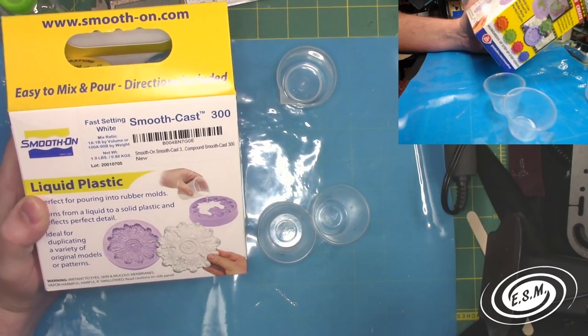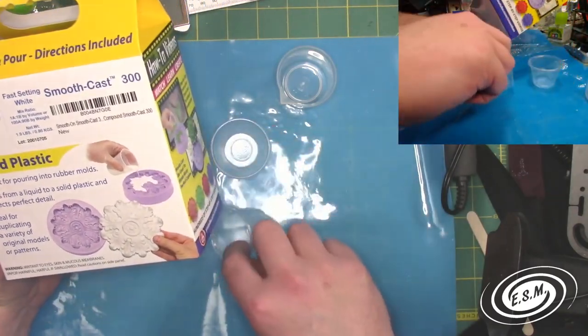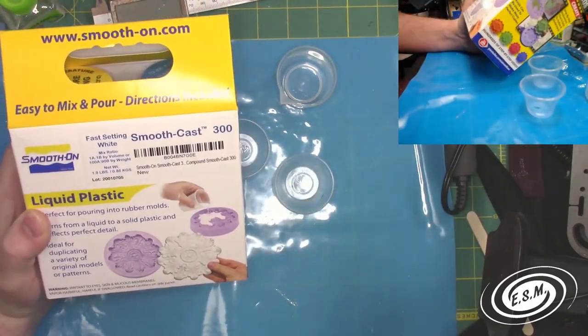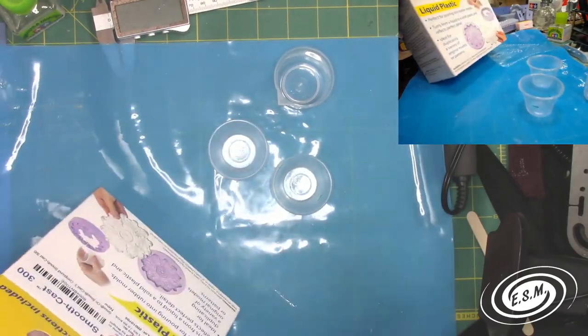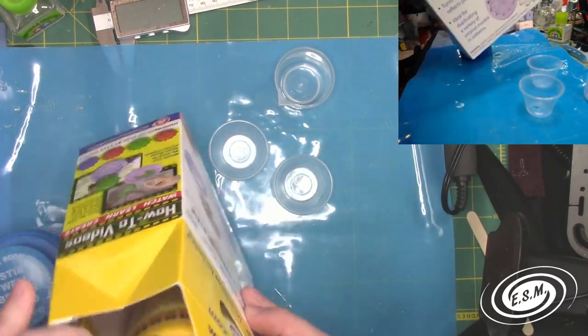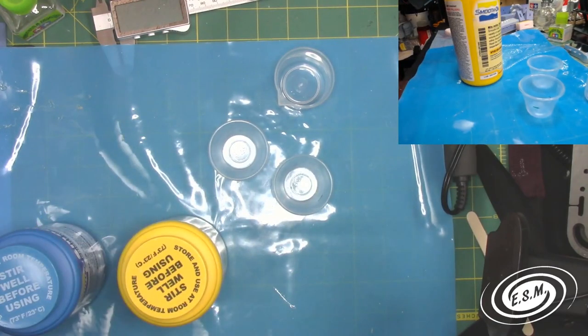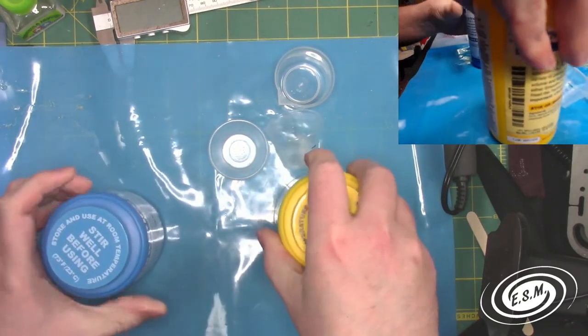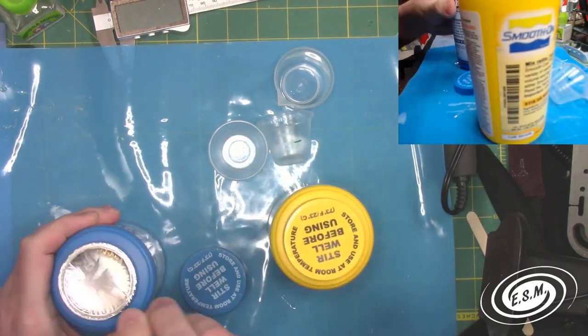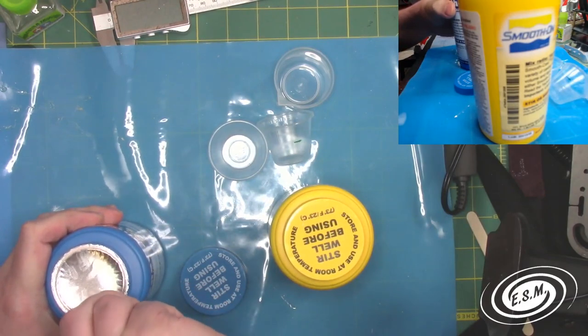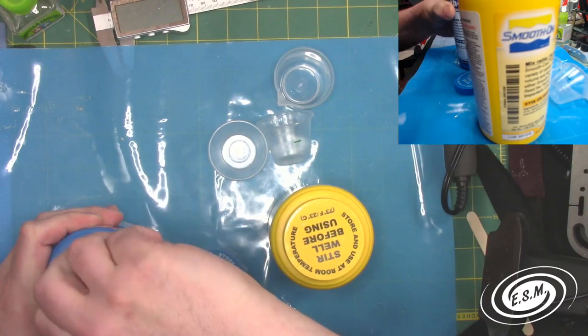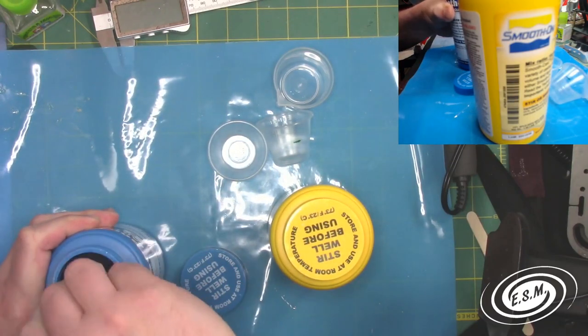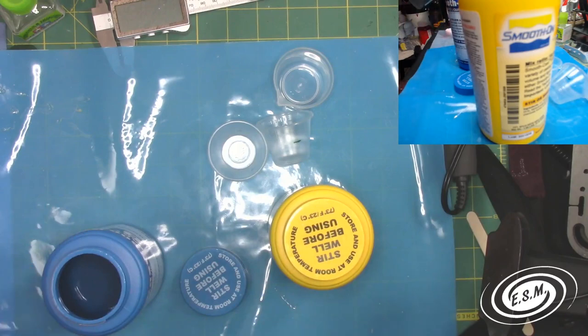We're going to do it by volume because I'm mixing up a larger batch than I normally would because I have quite a bit of molds to pour. I have been using the 65D and I wanted to try this stuff. I've also tried the 325 tintable.